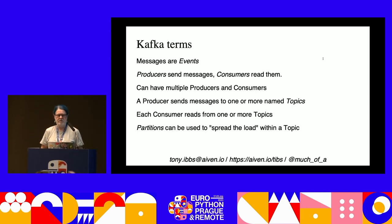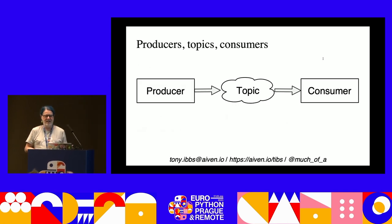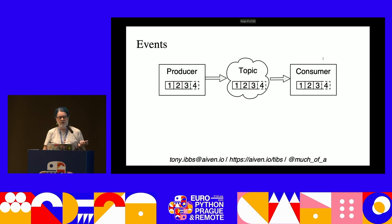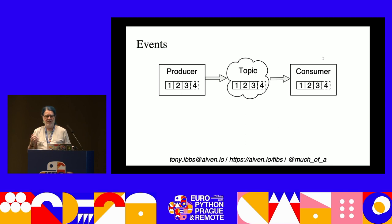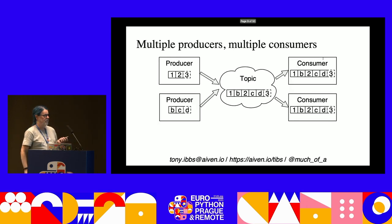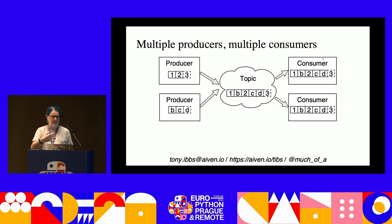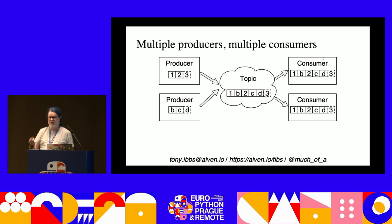In a simple diagram: producers send to a topic in Kafka in the cloud, and a consumer reads from it. A producer producing events 1, 2, 3, 4 sends them to Kafka, and the topic holds them in the same order; the consumer reads them out 1, 2, 3, 4 in the same order - we have order preservation. With multiple producers sending 1-2-3 and A-B-C respectively, they get interleaved in the topic but retain their relative ordering, and multiple independent consumers both read messages in topic order.